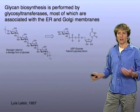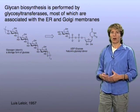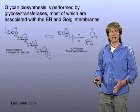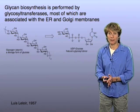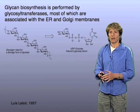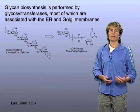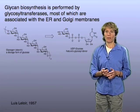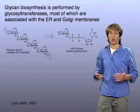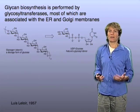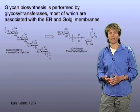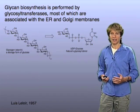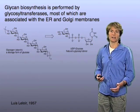The glycans are assembled inside the Golgi and the endoplasmic reticulum, and there are enzymes that reside in those compartments that carry out this enzymatic chemistry. We call those enzymes glycosyl transferases.